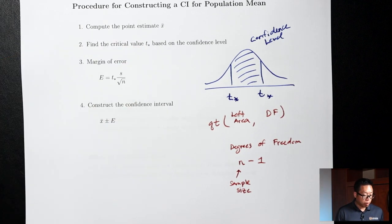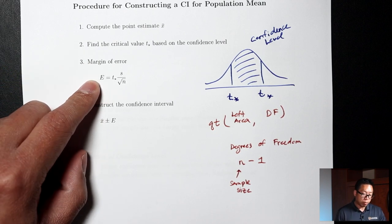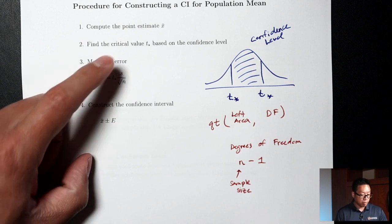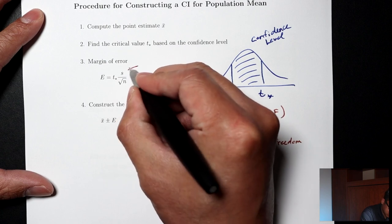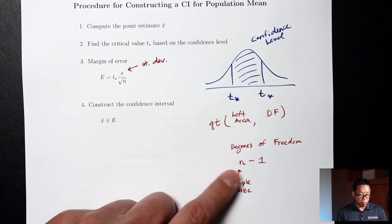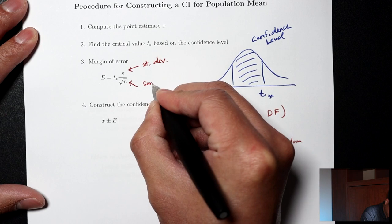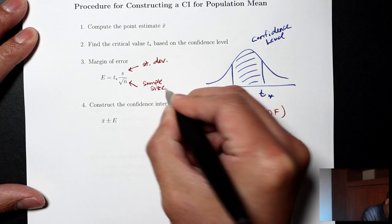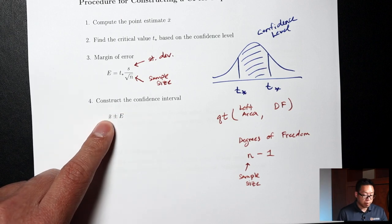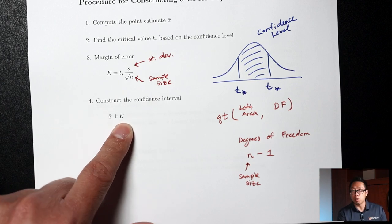After you have your t-star from step two, you'll find your margin of error using a different formula. The margin of error for a confidence interval for a mean is t-star times s over the square root of n, where s is the standard deviation and n is the sample size. The last step is to construct your confidence interval by taking your point estimate x-bar from step one, then adding and subtracting the margin of error e.